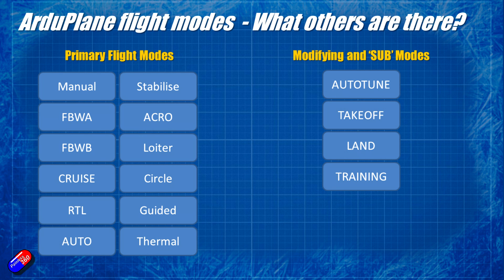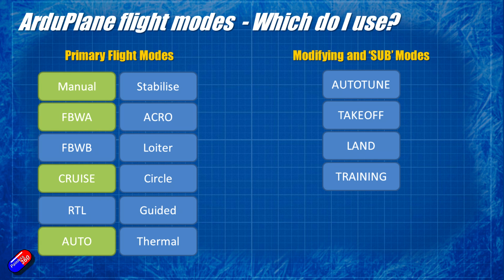Looking at the modes I tend to use regularly in ArduPlane: I only really fly in four — Manual, Fly by Wire A, Cruise, and Auto, and Auto is only there if I'm flying a mission. Realistically I'm probably only setting up three modes — Manual, Fly by Wire A, and Cruise — for the vast majority of flying, with Return to Launch set up on an 'oh dear' switch to bring it back if something goes wrong.